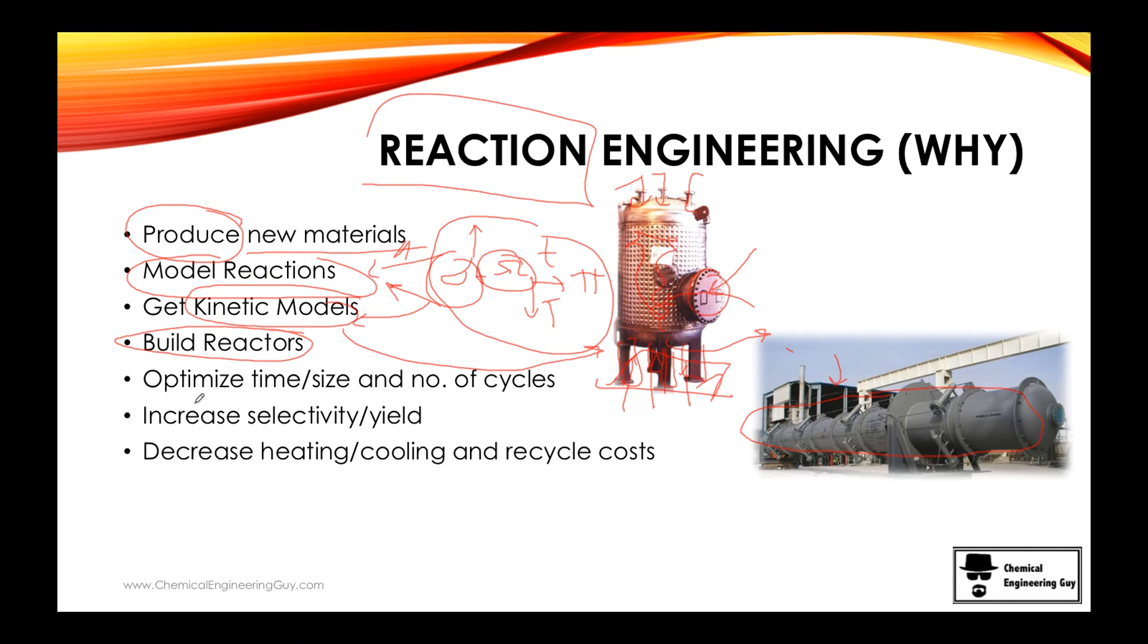You want to optimize time of reactions, size of reactor, and number of cycles - make it the least time, least size, and least number of reaction cycles. Another very important part is increasing selectivity. If A plus B can turn to C, but A plus C can turn to D, and you're interested in producing C, how can you avoid this? You'll see that you need to use very low amounts of A and very high amounts of B.